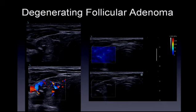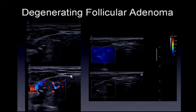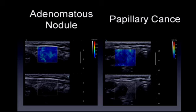This case of a degenerating follicular adenoma is very similar in B-mode appearance to the previous papillary cancer. There is some blood flow mostly in the periphery. On shear wave imaging, values are approximately 30 kilopascals. Both the follicular adenoma and the previous papillary cancer have very similar elastography characteristics. In another comparison case, an adenomatous nodule versus a papillary cancer shows similar B-mode and elastography characteristics—in fact, the benign nodule had higher velocities than the malignant nodule.